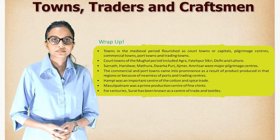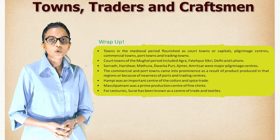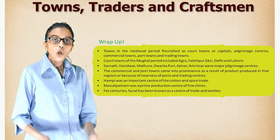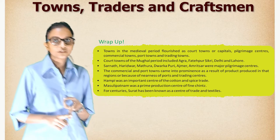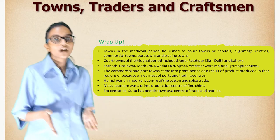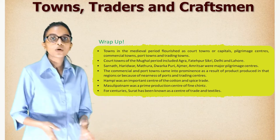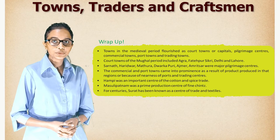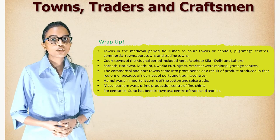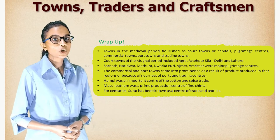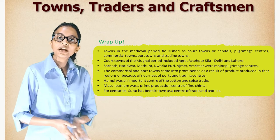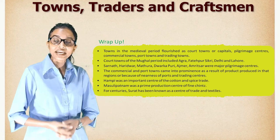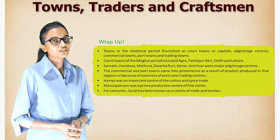Wrap-up: Towns in the medieval period flourished as court towns or capitals, pilgrimage centers, commercial towns, port towns, and trading towns. Court towns of the Mughal period include Agra, Fatehpur Sikri, Delhi, and Lahore. Sarnath, Haridwar, Mathura, Dwarka, Puri, Ajmer, and Amritsar were major pilgrimage centers. Commercial and port towns rose to prominence due to local products or nearby ports. Hampi was an important center of the cotton and spice trade. Masulipatnam was a prime production center of fine chintz. For centuries, Surat has been known as the center of trade and textiles.